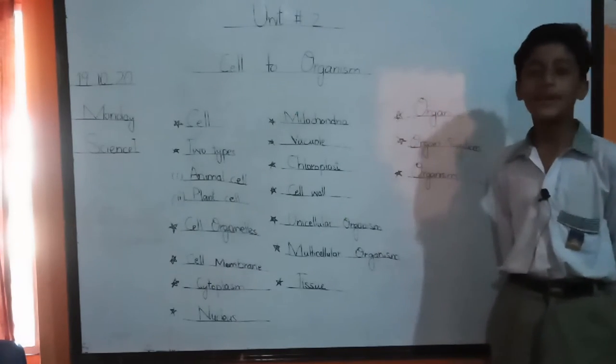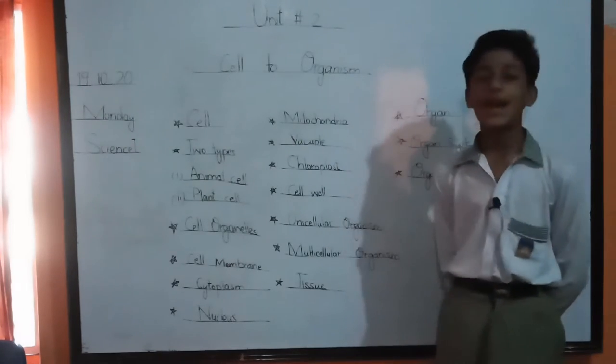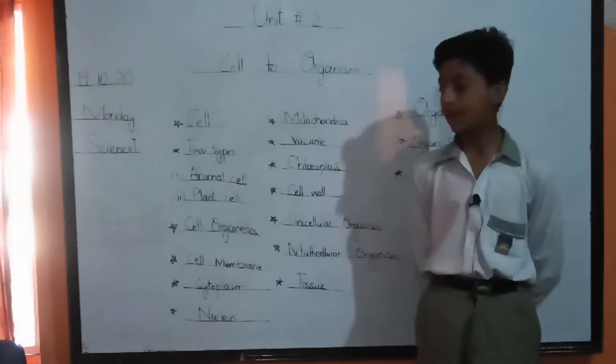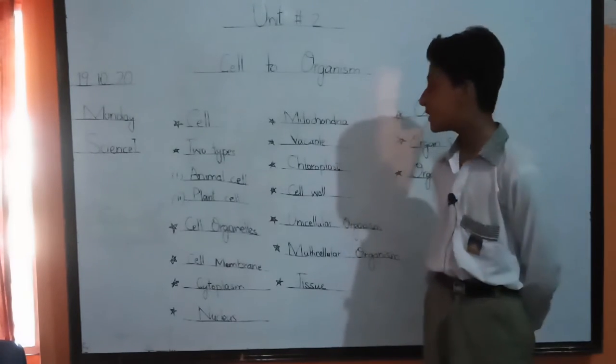Cell. Cell is the basic structural unit of life. Cells have two types: animal cell and plant cell. Now I will define cell organelles. Cell organelles make up the cell.